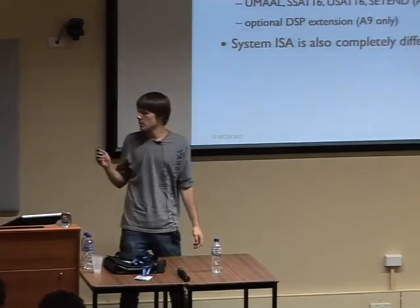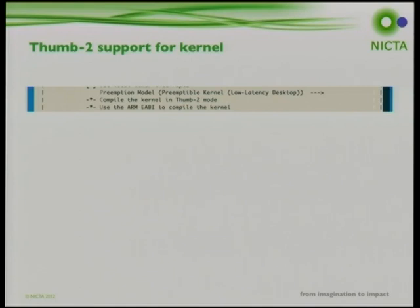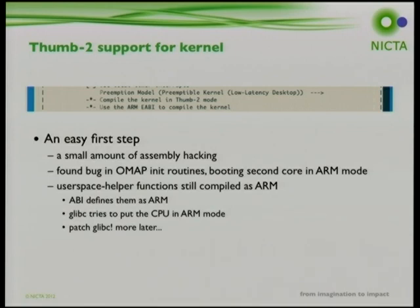We started by looking at existing Thumb2 support in Linux, which was an option in menuconfig, but initially it didn't work. There were lines of assembly that wouldn't compile for Thumb2 because it compiles to 16-bit instructions and has some literals it can't use, requiring fixes. Additionally, the second A9 core started in ARM mode even though we had compiled the kernel for Thumb2, which also needed to be fixed.